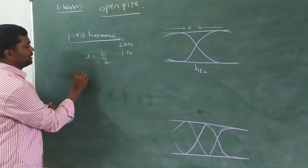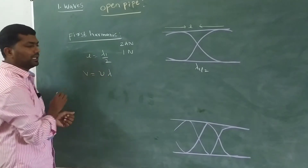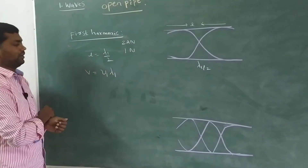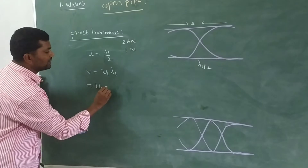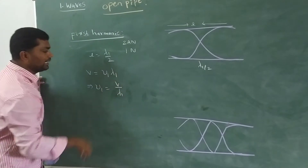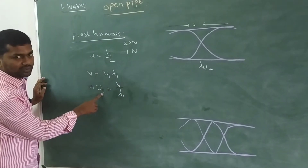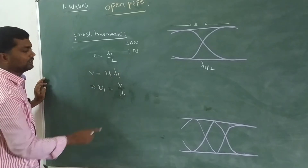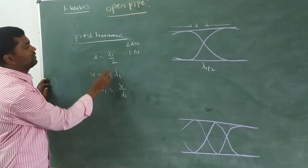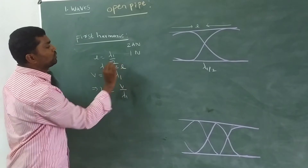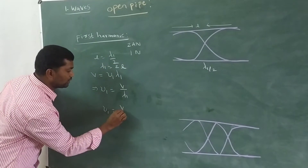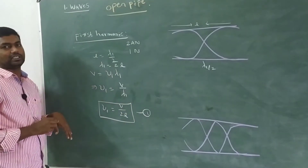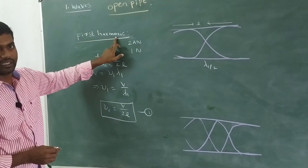Using the wave velocity equation, V is equal to ν₁λ₁. From this, ν₁ is equal to V by λ₁, where ν₁ is the fundamental frequency, V is the wave velocity, and λ₁ is the first wavelength. Since λ₁ is equal to 2L, we get ν₁ is equal to V by 2L. This equation gives the fundamental frequency, also called the 1st harmonic.